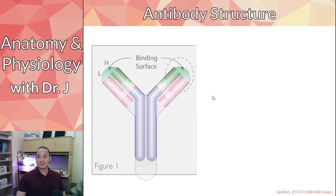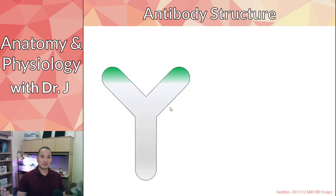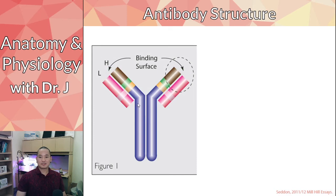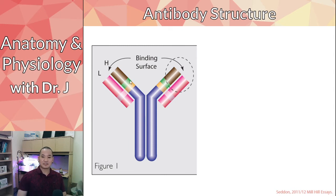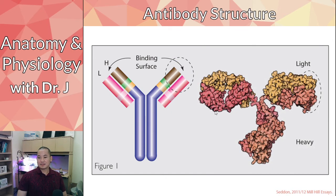In simplified form, an antibody looks like a Y shape. Looking at a slightly more detailed version, you can see the antibody has two arms and a trunk. It's actually made of four polypeptides: two heavy chains and two light chains. The heavy chains are identical to each other, as are the light chains. This gives the antibody two binding surfaces — like two arms with hands that grab onto antigens.